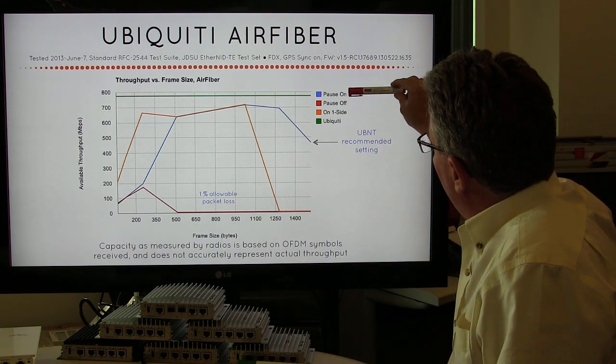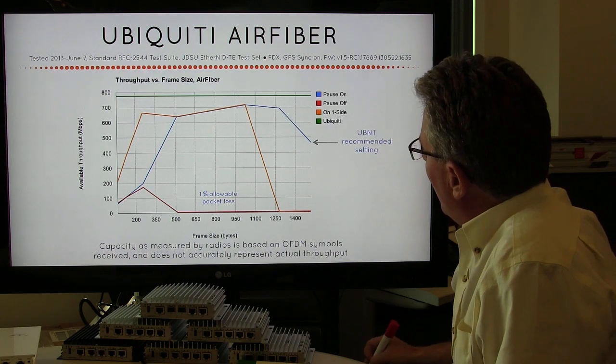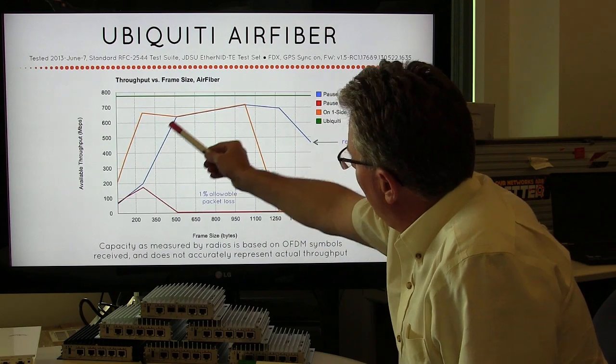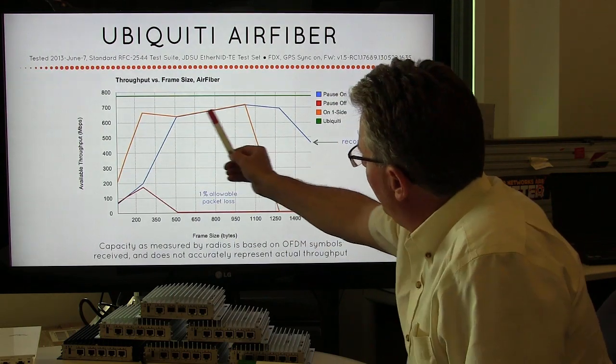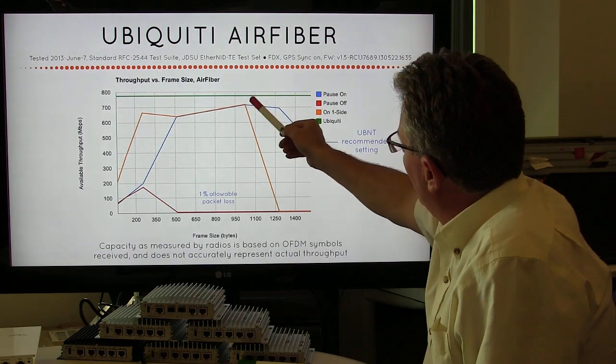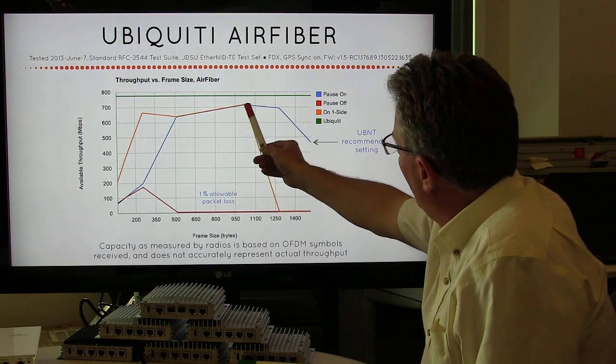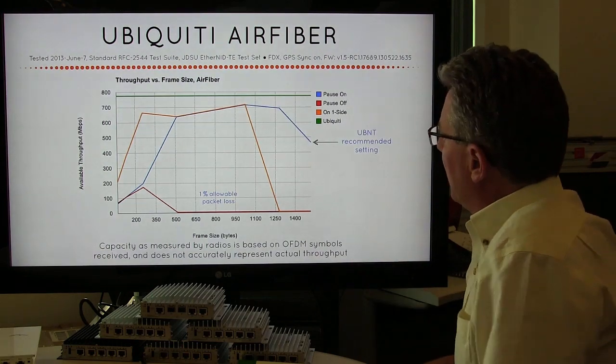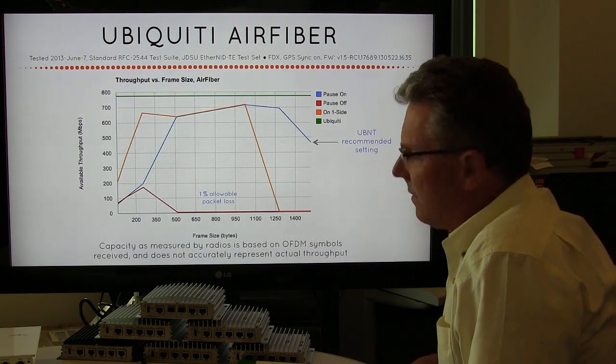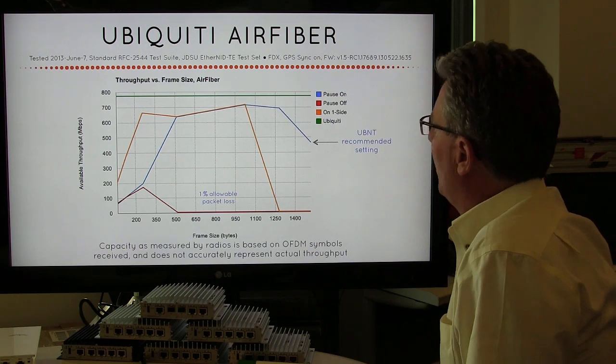So then we followed the complete recommendations with pause on both sides. And we can see, we had a nice, clean ascending line. Around the mid range, we got pretty good throughput. Still, a bit away from what the capacity was, but I think Chuck explained that earlier. And then we kind of drop off over here. So you people out in the community using this equipment, using the radios, having different ways of testing.